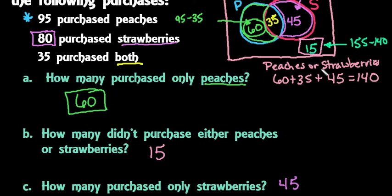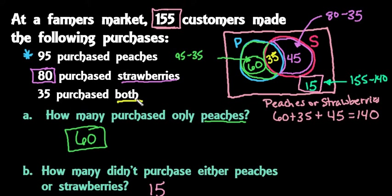Anytime you have a situation like this, the best thing to do is set up a Venn diagram starting with the overlap first. Then find the difference to get the outer part of each circle, then find the total inside the circles and subtract from the grand total to get the outside portion. Thanks for watching — if you have any questions or additional topics you'd like covered, please let me know, and please subscribe.